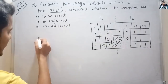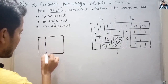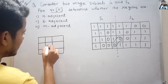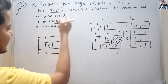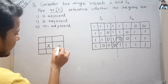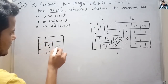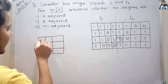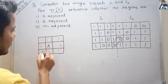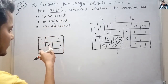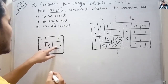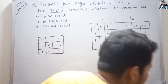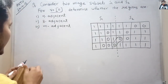Suppose we have a pixel here. The 4-adjacent pixels will be here, here, here, and here — these four are 4-adjacent to this pixel. All these 8 surrounding pixels are the 8-adjacent to this pixel. So these four are 4-adjacent and all eight are 8-adjacent.